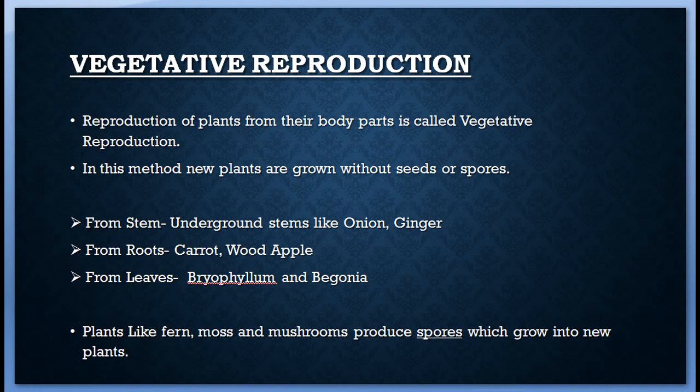From roots: plants like sweet potato, carrot, and wood apple, when left in the soil, grow into new plants. When the roots of plants like dahlia and asparagus are placed in water, fresh roots develop at the lower end and shoots appear at the upper end. New plants can also develop from leaves. Plants like Bryophyllum and Begonia have small buds and leaflets on the margin of their leaves, and when these come in contact with moist soil, new plants grow.